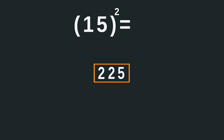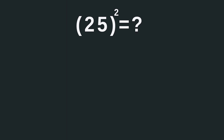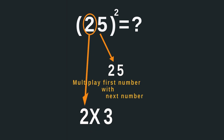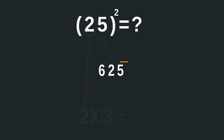Let us try another example — let's find the square of 25. Multiply the last digits: 5 times 5 equals 25. Then multiply the first digit, which is 2, with its next digit, which is 3. So 2 times 3 equals 6. Now join these results together, 25 and 6, to get your final answer, which is 625.